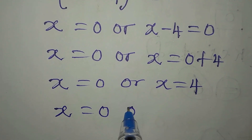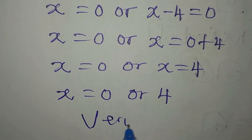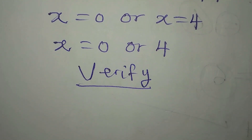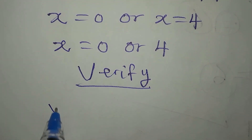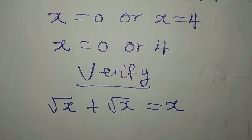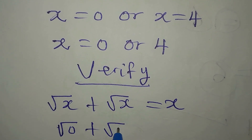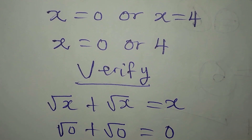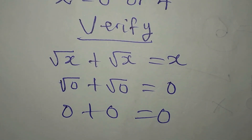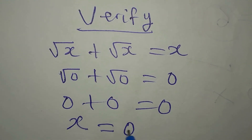Let's verify, as we always do, so that we don't end up with wrong workings. We had square root of x plus square root of x equals x. If we put x equals 0, we get square root of 0 plus square root of 0 equals 0, which is 0 plus 0 equals 0. So x equals 0 satisfies the equation.